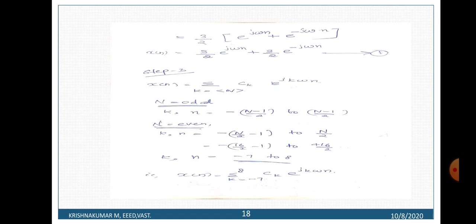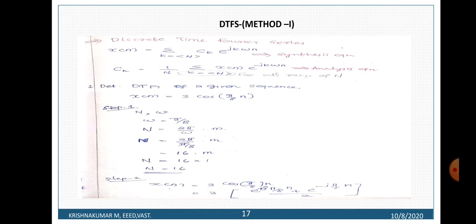Step 3: Apply the synthesis equation. We now have the value of capital N. The formula is x of n equals sigma k from minus N/2 to plus N/2 minus 1, of c_k times e raised to j·k·omega·n. With N even, k ranges from minus 7 to 8, giving sigma k equals minus 7 to 8 of c_k times e raised to j·k·omega·n.